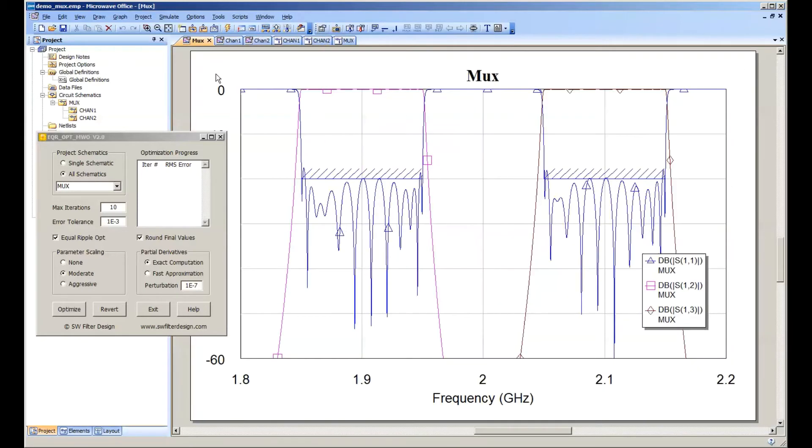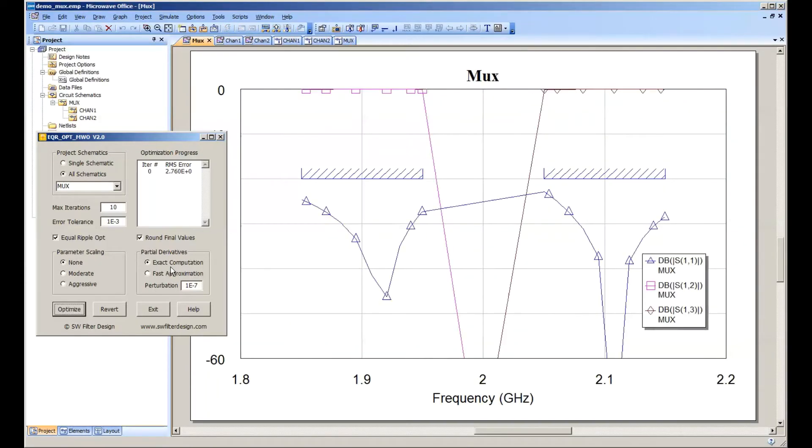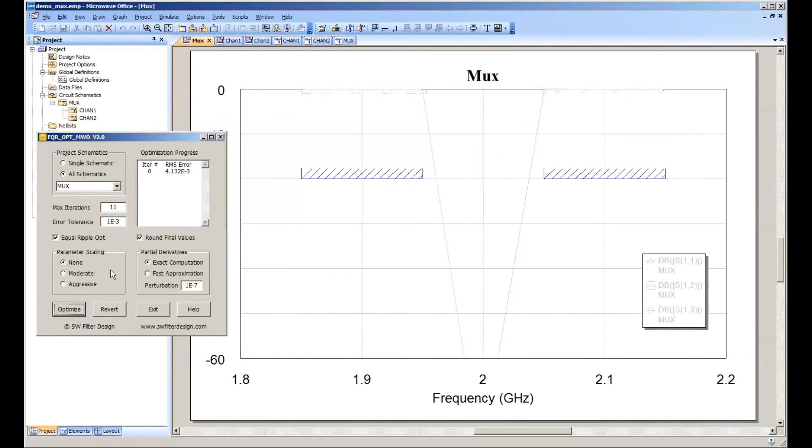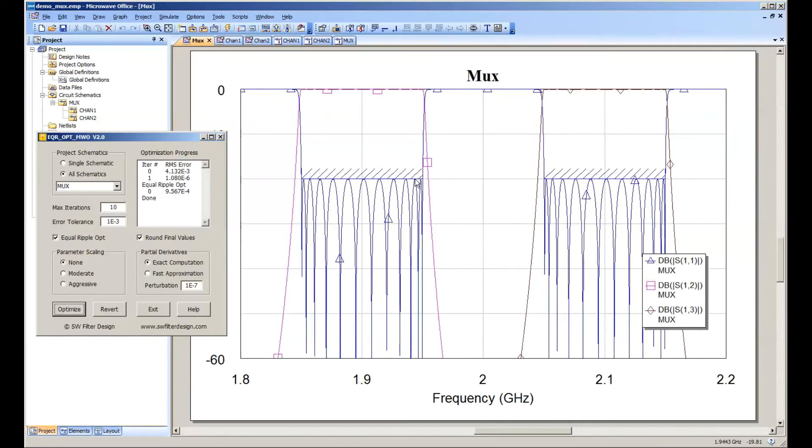So if we look at our final result here and hit the go button on the optimizer, it will pull this into an exact equal ripple response quite quickly. And we can do it one more time just to make sure it's perfectly equal ripple. But as you can see, at least by eye, those two channels are perfectly equal ripple.